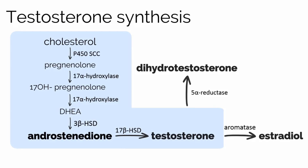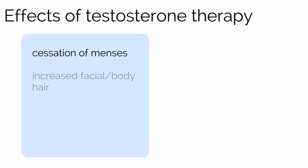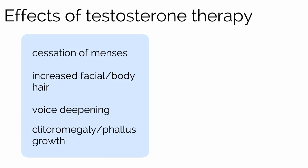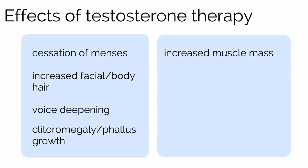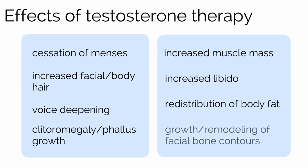Remember this — we will come back to it later. For our patient, the major goal of therapy is to increase testosterone to the male physiologic range. Testosterone therapy promotes cessation of menses, as well as the development of secondary male sex characteristics, including increased facial and body hair, voice deepening, clitoromegaly or phallus growth, increased muscle mass, increased libido, redistribution of body fat, and growth and remodeling of facial bone contours.